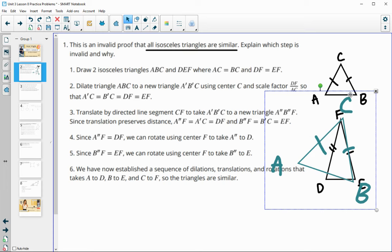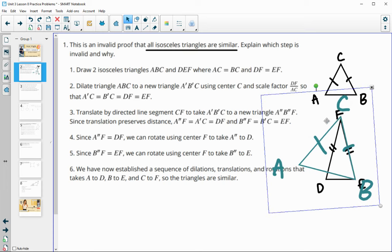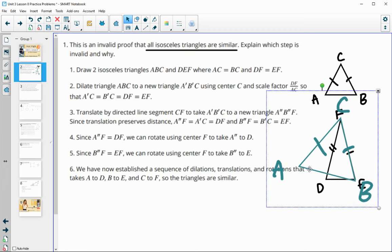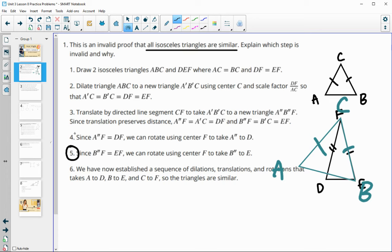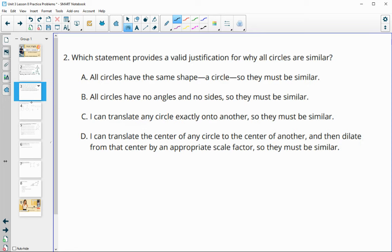And then it says that we have gotten the entire triangle to be on top of the other one. So that's where it goes wrong, because once we rotate a second time, so in this step, when we go to rotate to put B onto E, it moves A off of D. Okay, so rotating again moves A off of D, and so we don't have a triangle that lands on top of the other one.